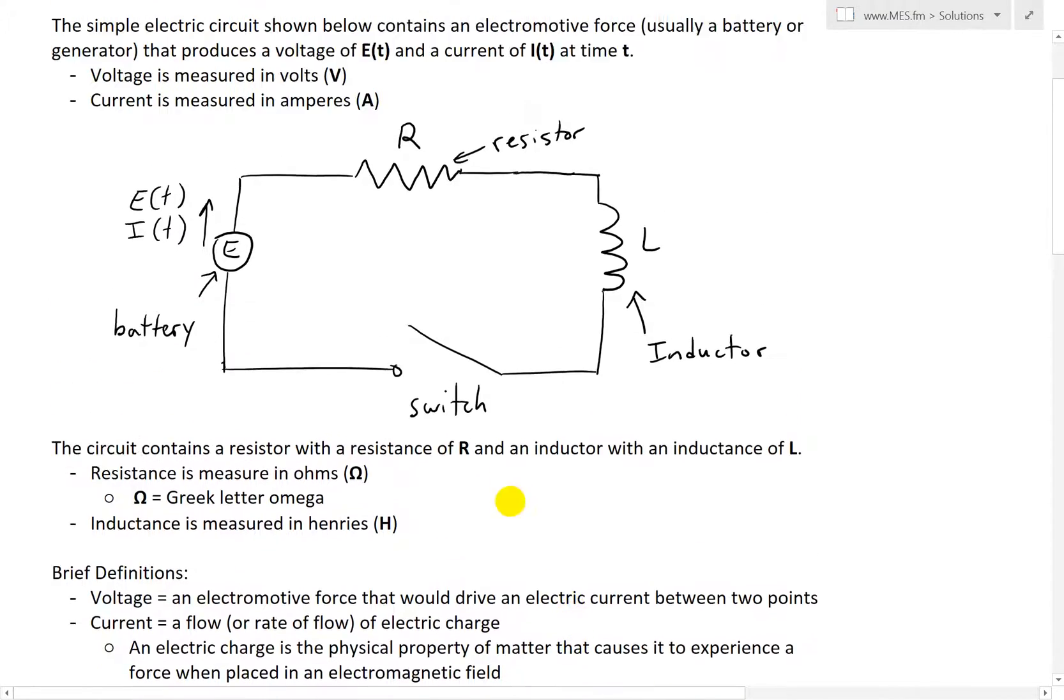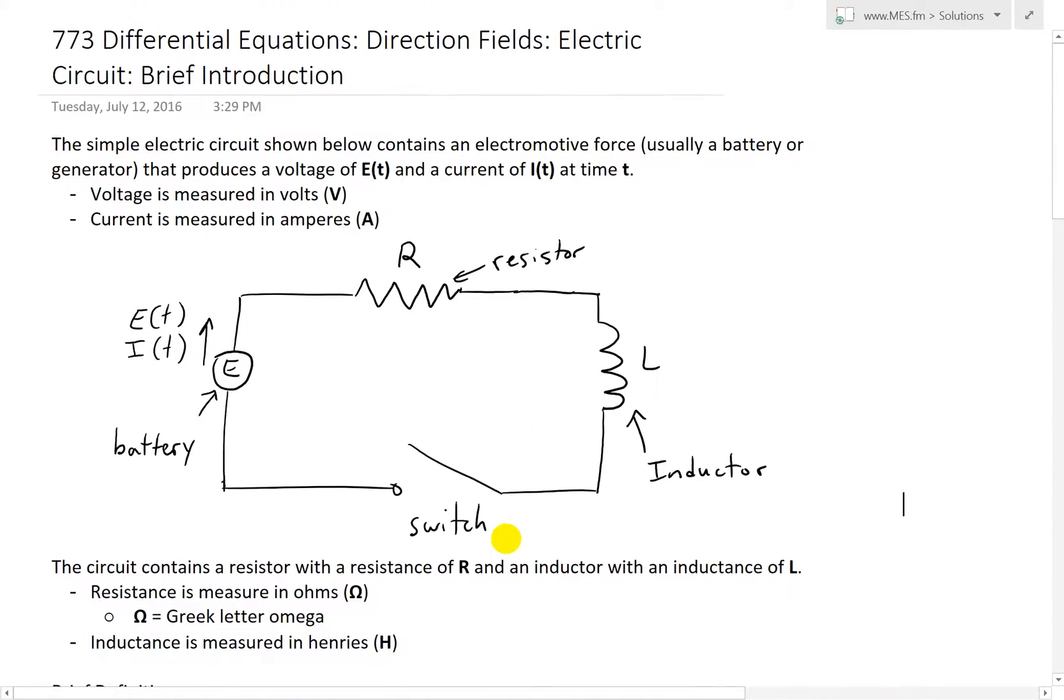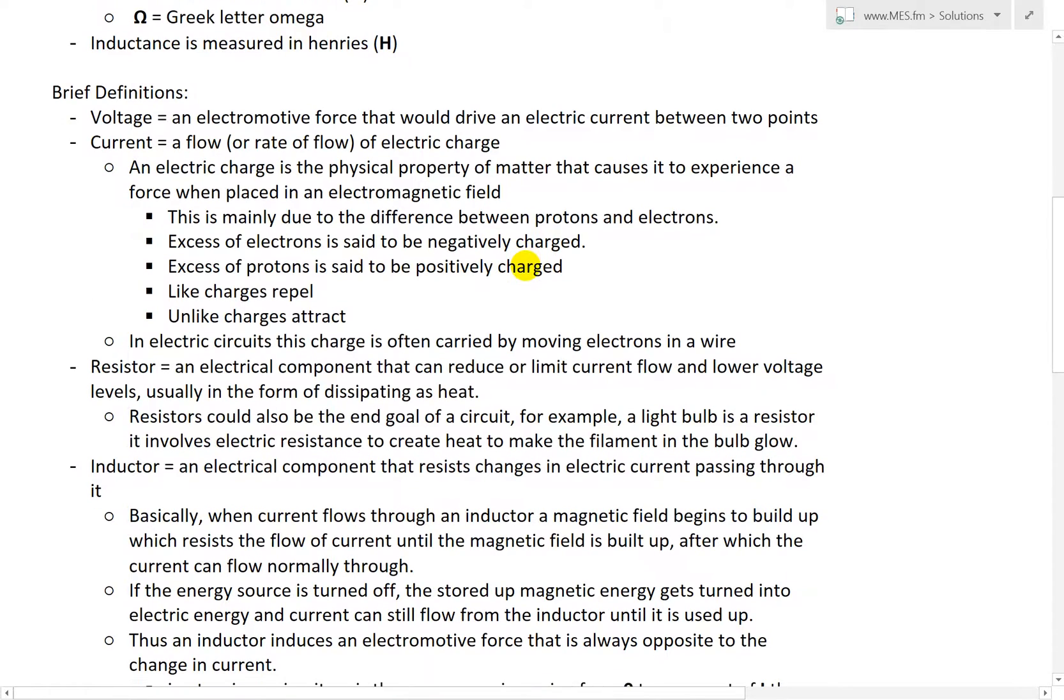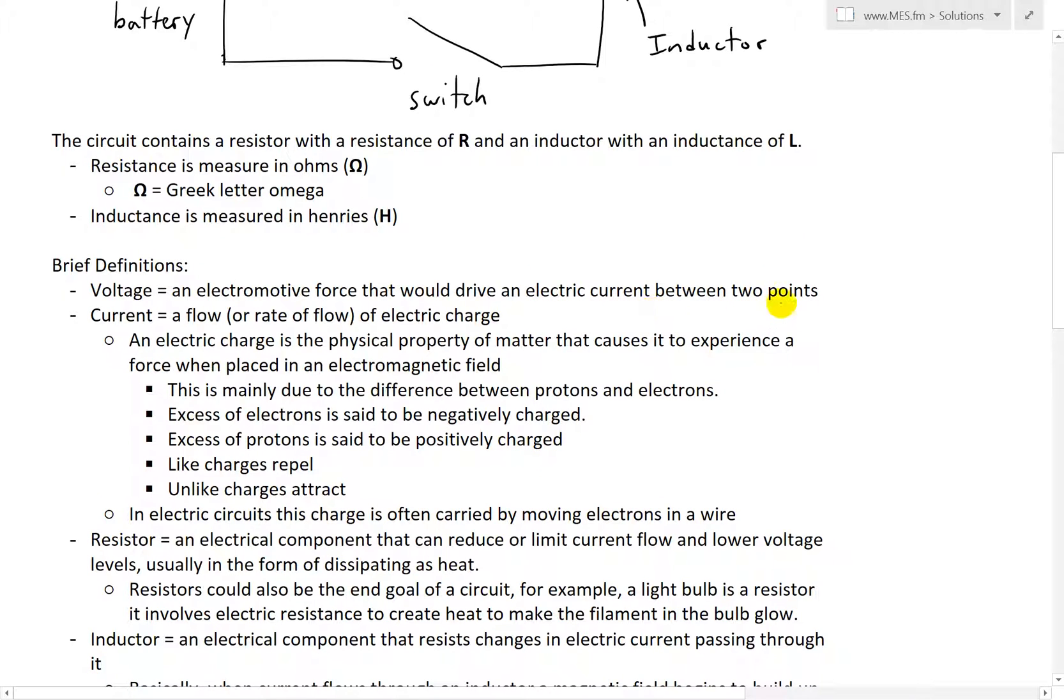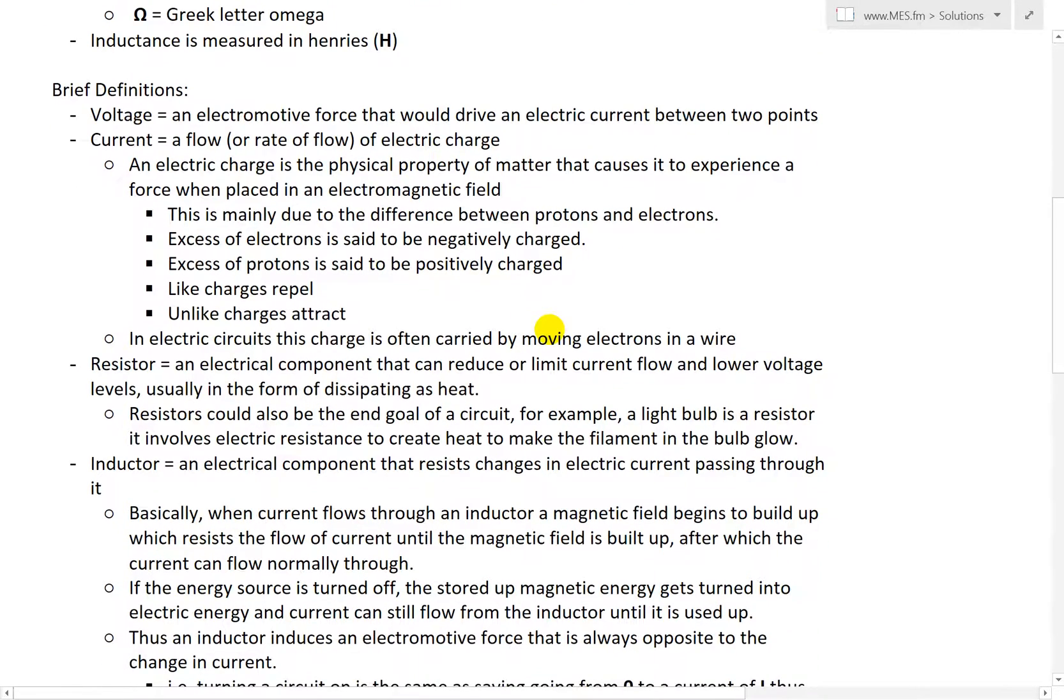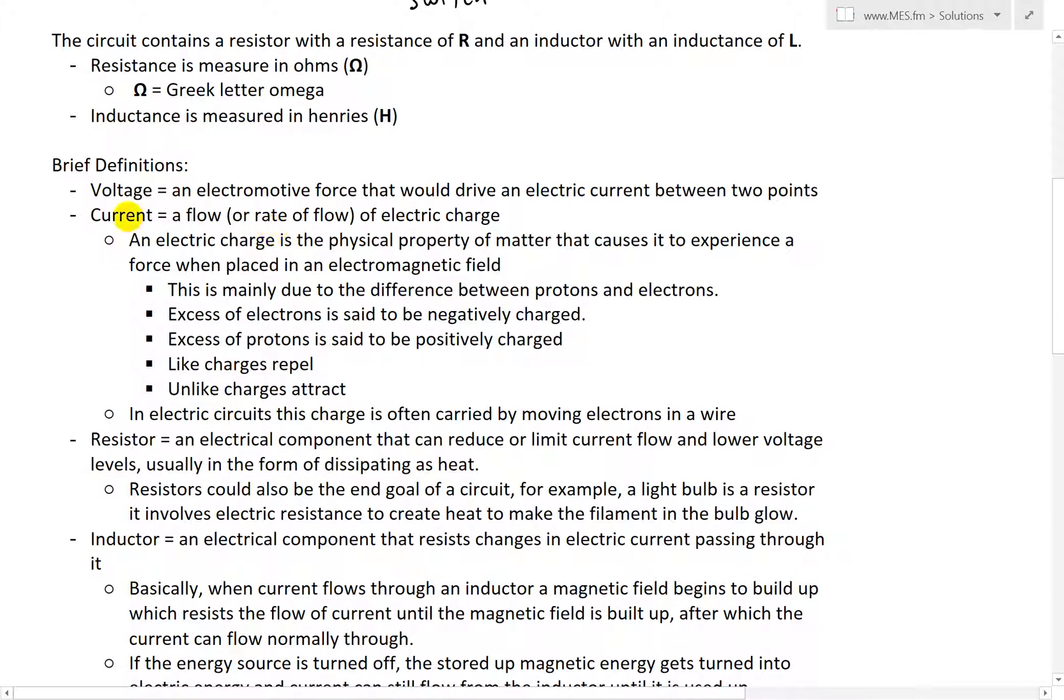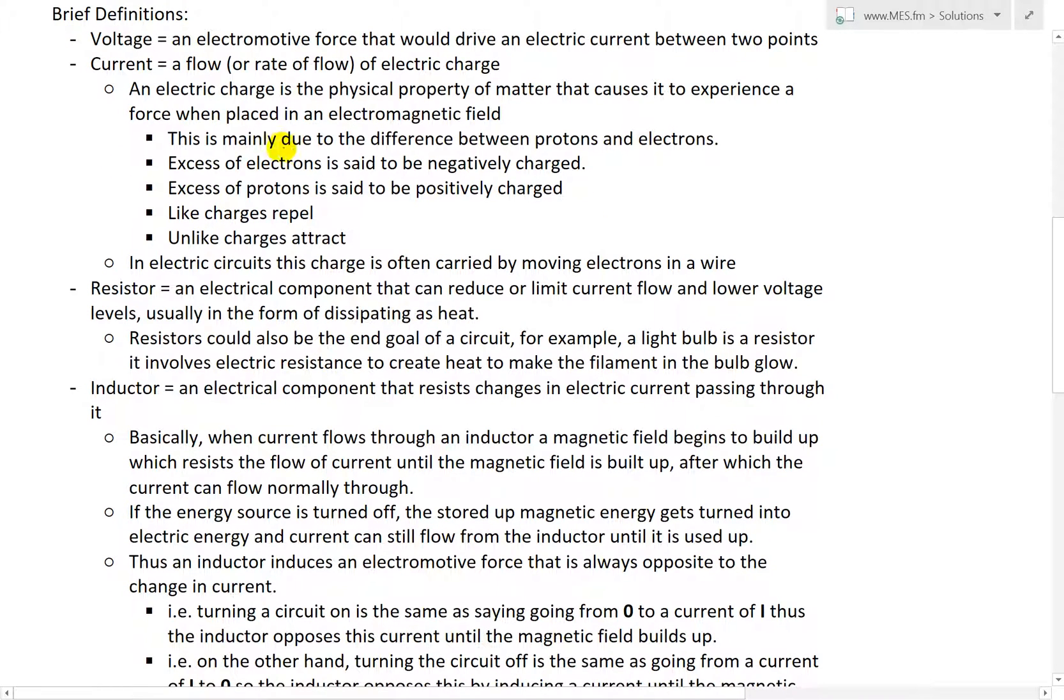Brief definitions: voltage is an electromotive force that would drive an electric current between two points, and a current is a flow or rate of flow of electric charge. Basically, voltage is pushing an electric charge, which is the current - the flow of electric charge. An electric charge is the physical property of matter that causes it to experience a force when placed in an electromagnetic field.